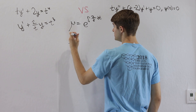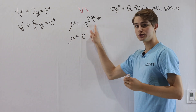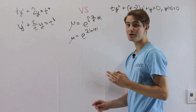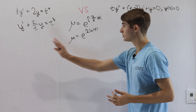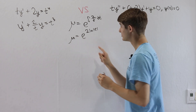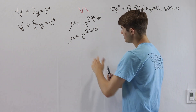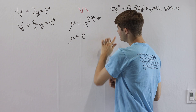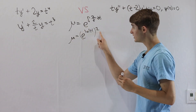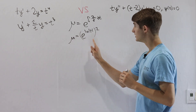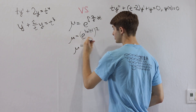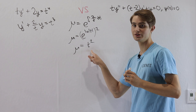Computing this, mu equals e to the 2 times the natural log of t. We don't need to worry about the plus C because it just multiplies the whole equation by a constant. We can rewrite e to the 2 ln t as e to the ln t squared, which simplifies to t squared. So our integrating factor mu is just t squared.